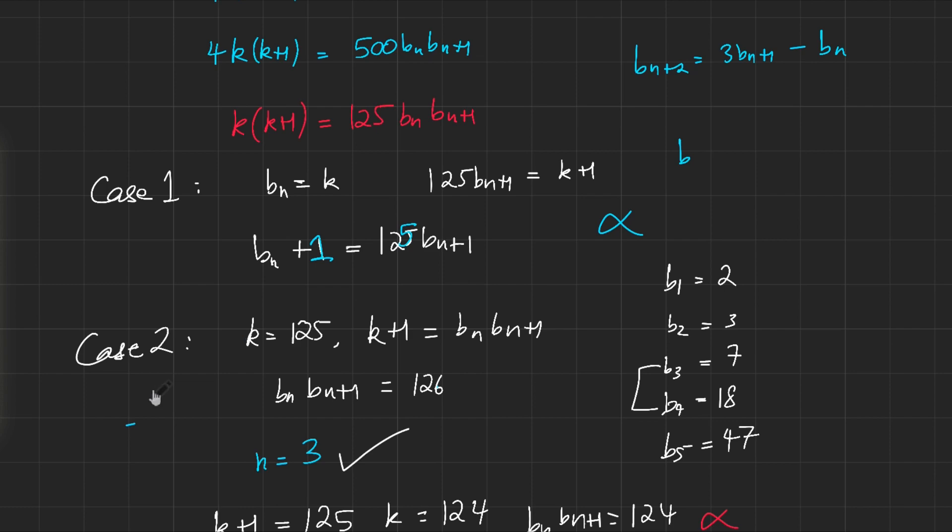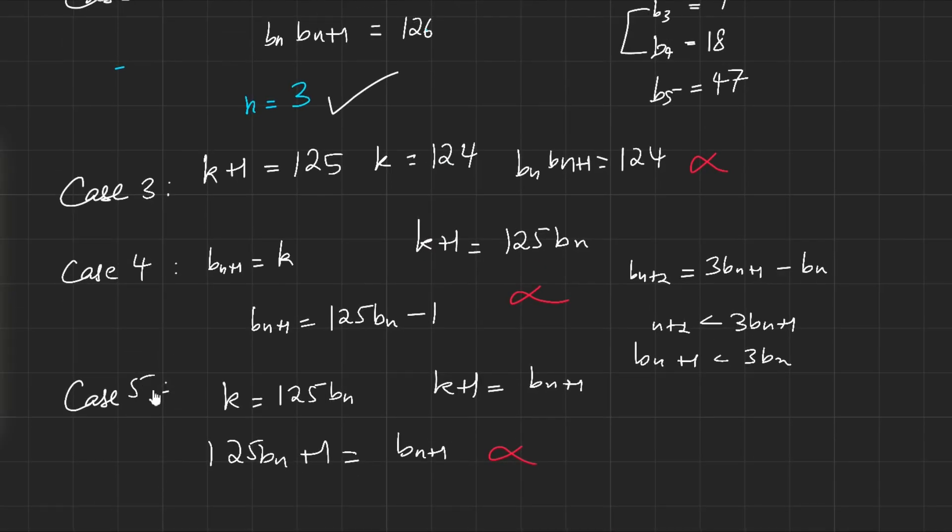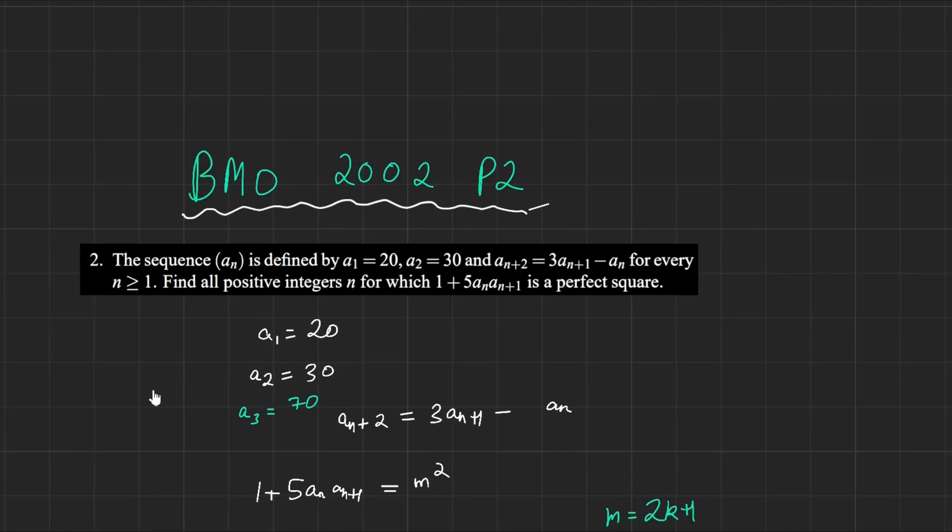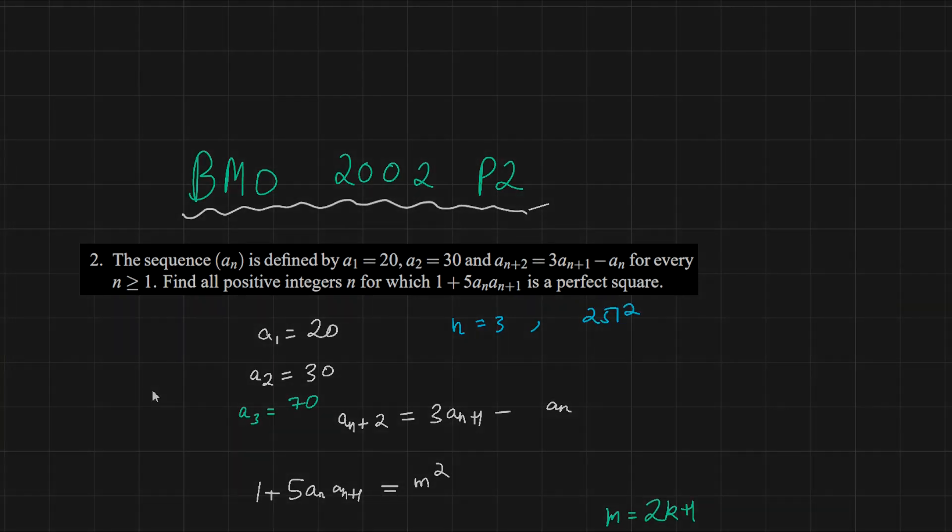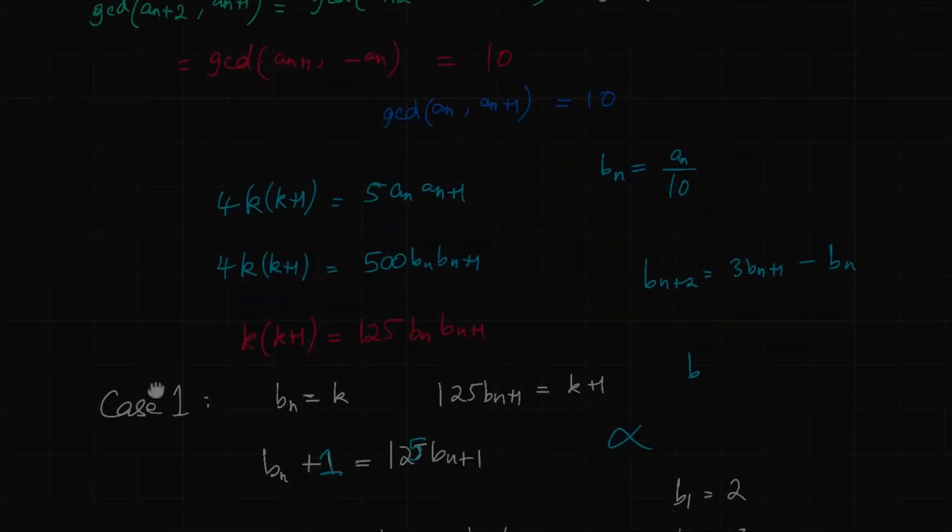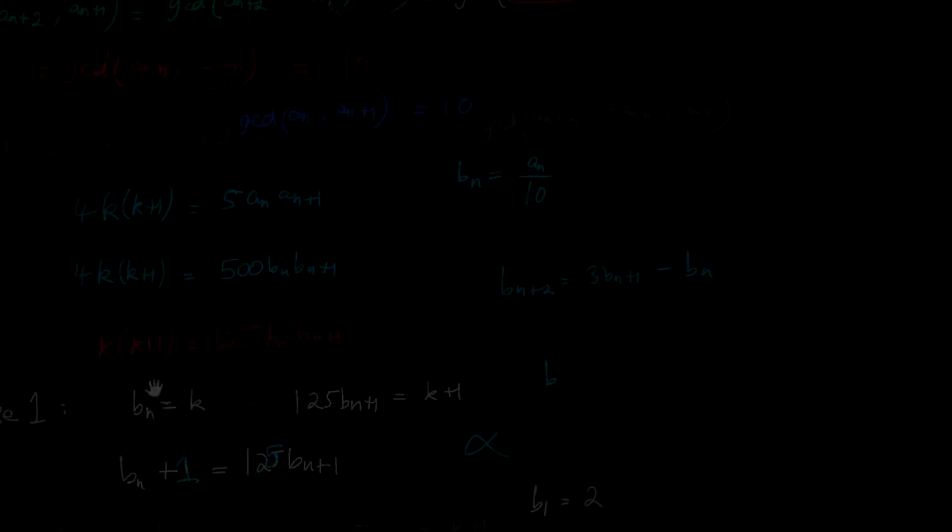So out of checking all of these cases, which were 5 cases and not too hard to check, we found that n equals 3 is the answer. The only time that 1 plus 5aₙ times aₙ₊₁ is a square is at n equals 3 when you have 251 squared. And that's the problem solved. Do leave a like and subscribe if you like problems like these. I'll be doing more Olympiad problems.